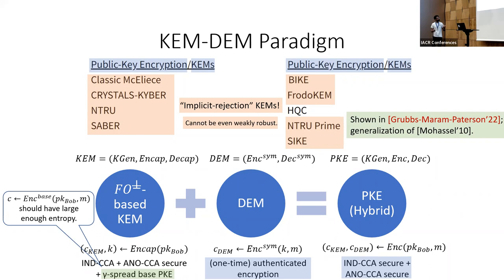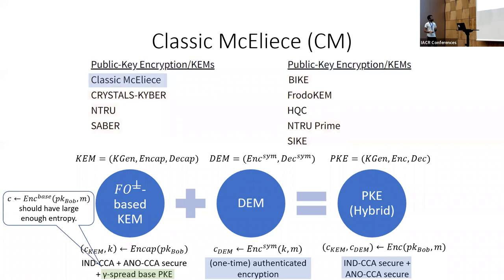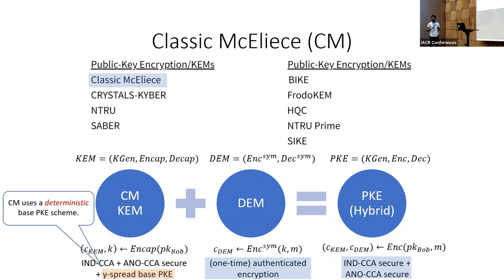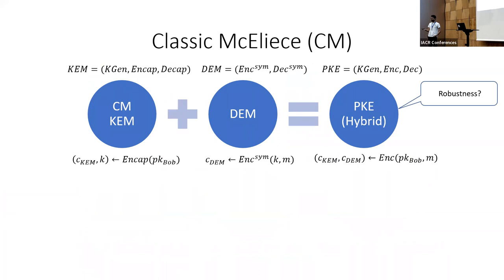Now we have some hope of obtaining anonymous PKE schemes when the starting KEM is a NIST KEM which is implicitly rejecting. In our work we wanted to do a case study of these four schemes. First we focused on Classic McEliece. Unfortunately, the base PKE scheme used by Classic McEliece is a deterministic scheme, so by definition it does not satisfy the notion of gamma-spreadness. So again, the result looks good but it does not apply to the concrete scheme of Classic McEliece. But let's focus on robustness — what can we say about the robustness of the Classic McEliece PKE scheme? Robustness is an important security property in its own right.